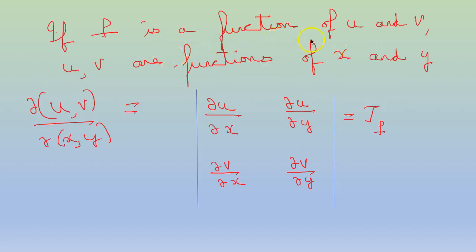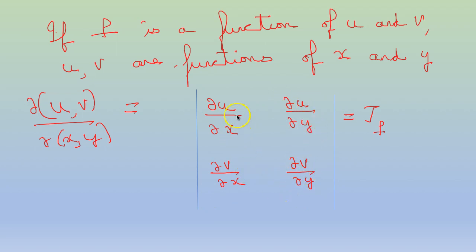If f is a function of u and v, where u and v are functions of x and y, then the Jacobian of f will be: del u by del x and del v by del x in the first column, del u by del y and del v by del y in the second column. So in the first column we are taking partial derivative with respect to x, and in the second column we are taking partial derivative with respect to y. We denote it by Jf.